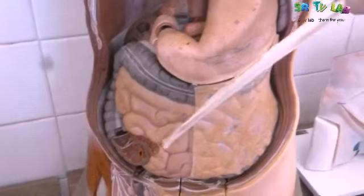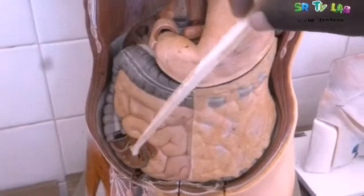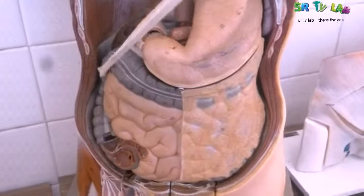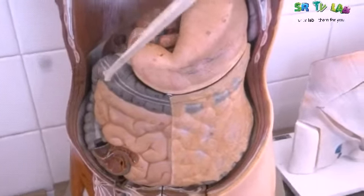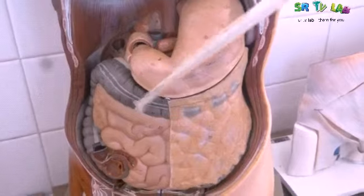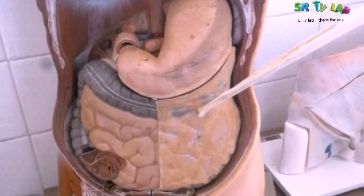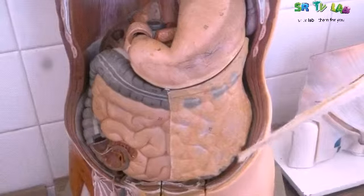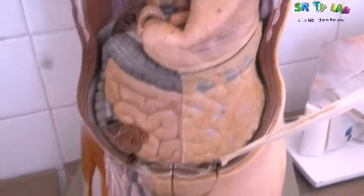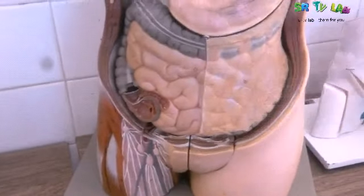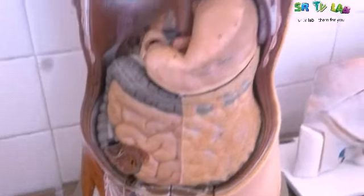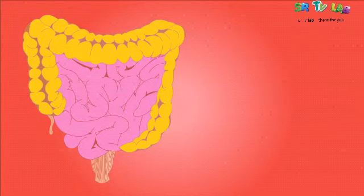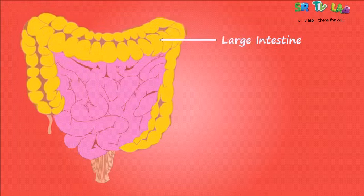The small intestine is actually the longest organ within the body. It is connected to the large intestine, which has what we call the colon. Here are the intestines and all their functions.